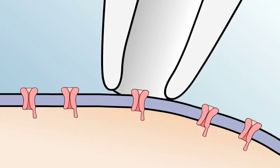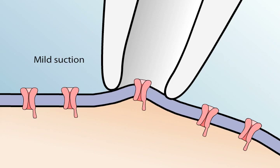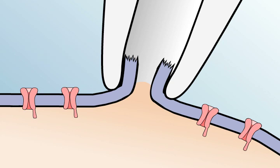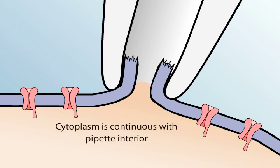Technical modifications have enhanced the patch clamp technique. For example, if the membrane patch within the pipette is disrupted by briefly applying strong suction, the interior of the pipette becomes continuous with the cell's cytoplasm. This arrangement allows measurements of electrical potentials and currents from the entire cell and is therefore called whole cell recording.